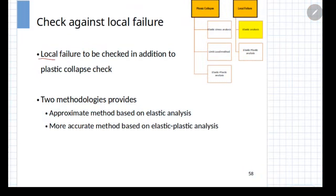Let us first understand what the local failure check does. As compared to the plastic collapse check which considers total failure of the cross section, the local failure check examines the stress distribution at every point of the model and ensures that the stress at any point is within the allowable limits.